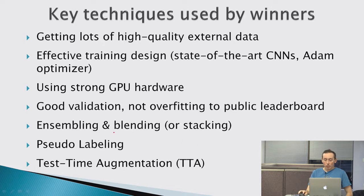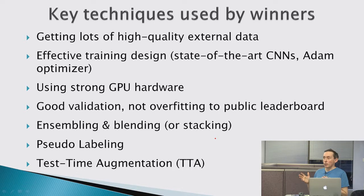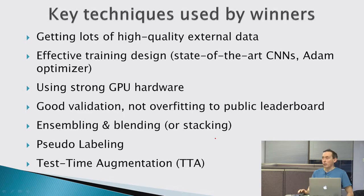Other methods winners used were ensembling, blending, and stacking. The idea is that when you use several different models and combine their results in a smart way, you get better performance than with just one model. Other techniques include pseudo-labeling and test time augmentation — changing images in the test set by performing certain transformations to get better predictions.